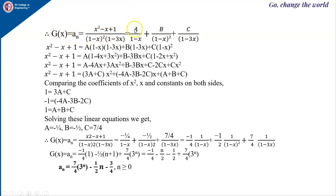Expanding: A·(1 − x)·(1 − 3x) = A·(1 − 4x + 3x²). Opening the brackets gives A − 4Ax + 3Ax², plus B − 3Bx, plus C·(1 − x)² expanded as C·(1 − 2x + x²), giving C − 2Cx + Cx².